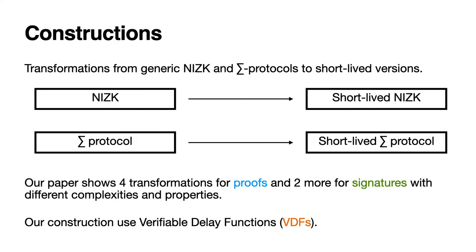We construct short-lived proofs and signatures by transforming generic NIZK and sigma protocols into their short-lived variations. In our paper, we have four transformations for proofs and two more for signatures, and they each have different complexities and properties.